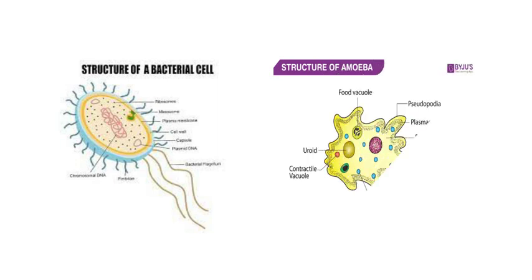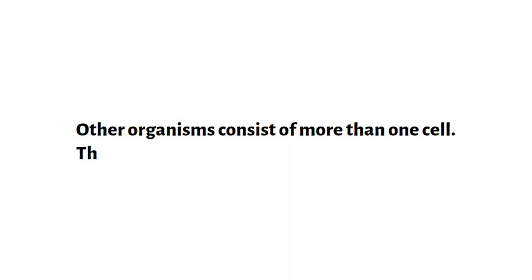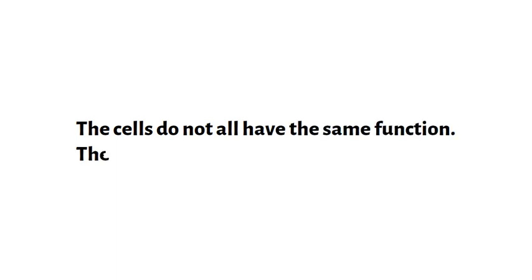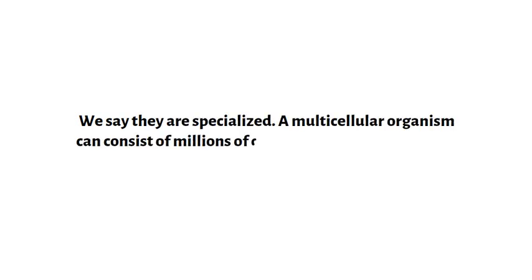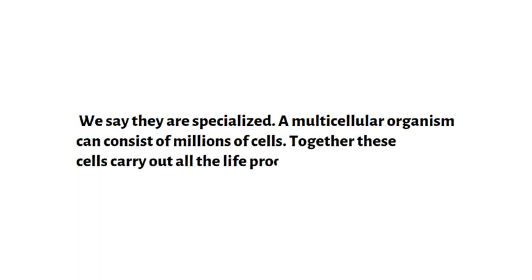Other organisms consist of more than one cell — these are multicellular organisms. The cells do not all have the same function; they only carry out specific functions, so we say they are specialized. A multicellular organism can consist of millions of cells. Together, these cells carry out all the life processes.